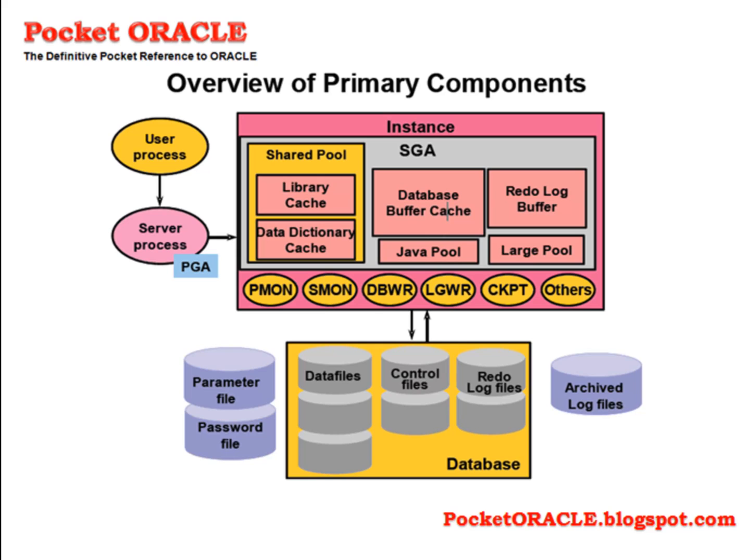The instance and the database. They are separate but connected. The instance consists of memory structures and processes. Its existence is transient — in your RAM and on your CPUs. The database consists of physical files on disk. Thus the lifetime of the instance is only as long as it exists in memory. It can be started and stopped.